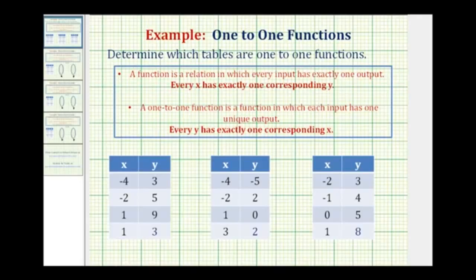In this problem, we're given three relations in the form of tables, as we see here below. We're asked to determine which tables are one-to-one functions. To test to see if a relation is a one-to-one function, we first have to test to see if it's a function, and then test to see if it's a one-to-one function. So let's review both definitions.